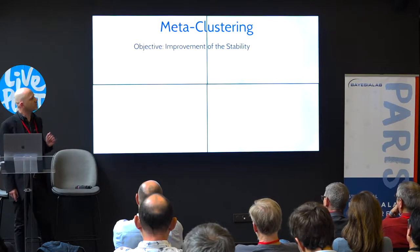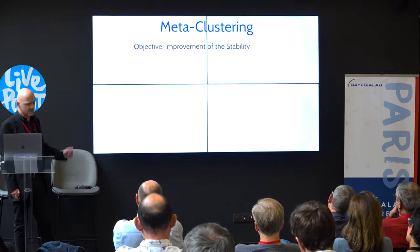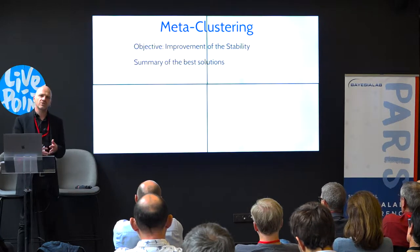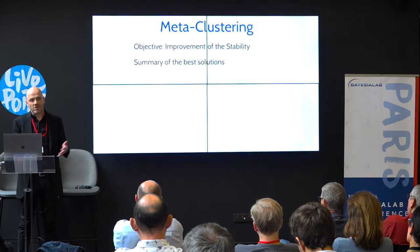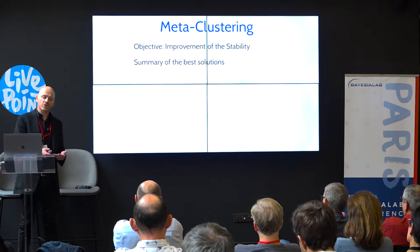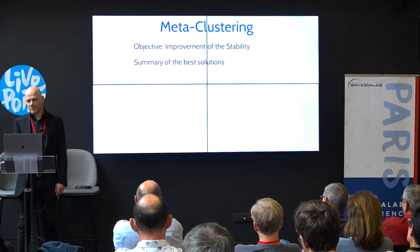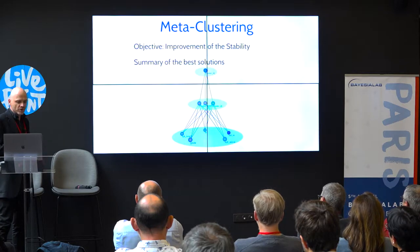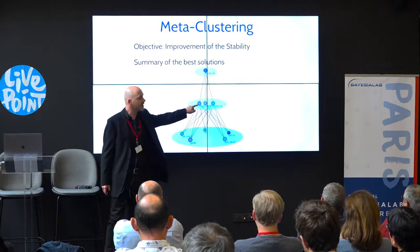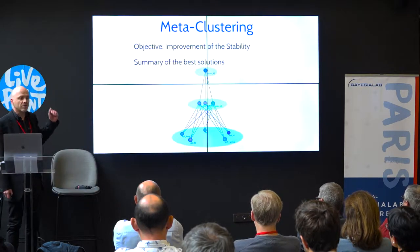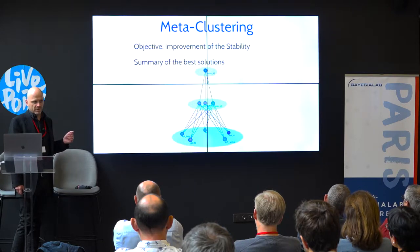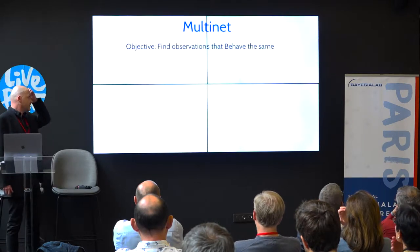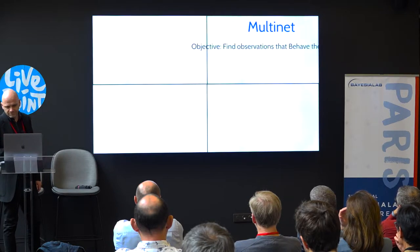To improve stability — one key quality of clustering — we developed what we call meta-clustering, which is a way to summarize the best solutions. One objective of clustering is to summarize the data, so we can cluster the solutions we have found in order to improve stability. If you select this option, you generate many solutions; each node in this second layer is the hidden value we created, and then we cluster those solutions to produce a much more stable result.